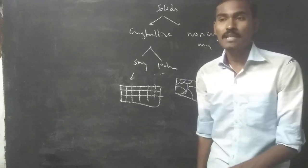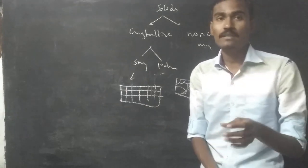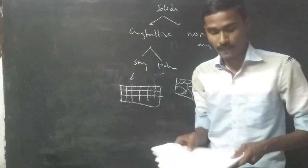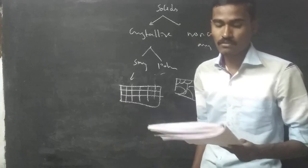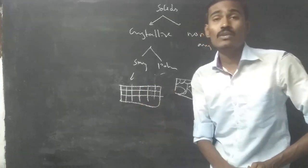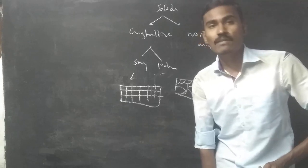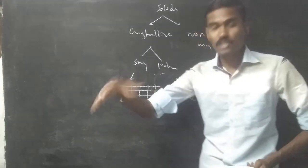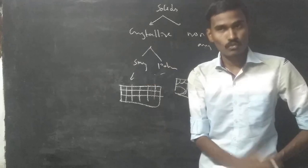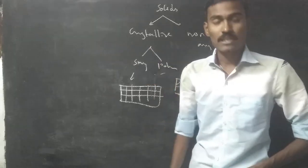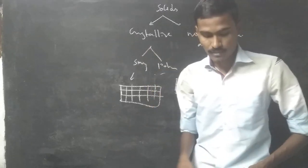Crystallography: the study of geometrical forms and the physical properties of crystalline solids is known as crystallography. Crystal structures are described using 7 crystal systems and 14 Bravais lattices.